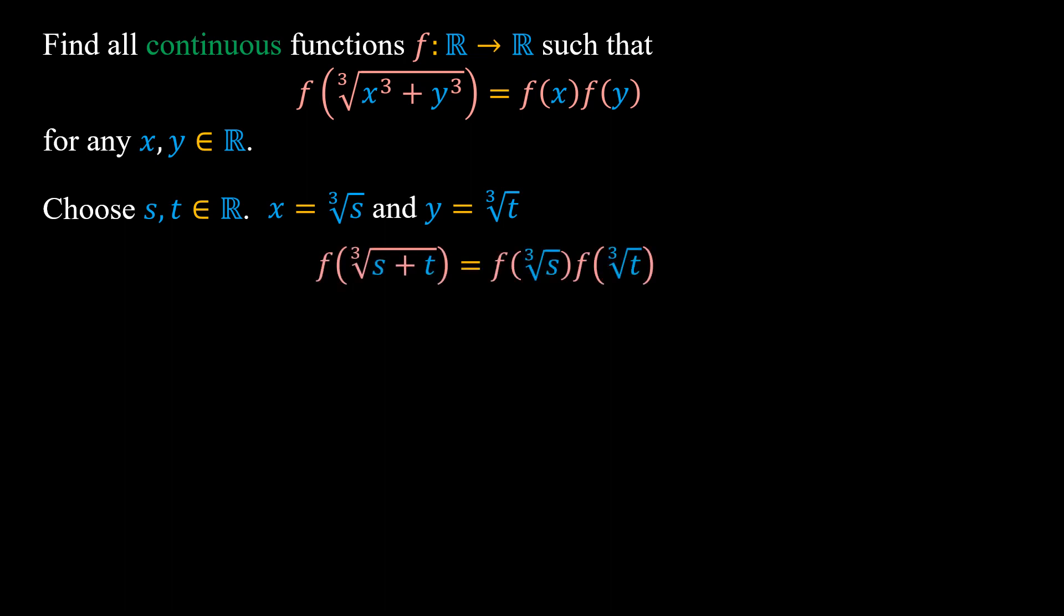If we suppose g of s equals f of the cubic root of s, we have g of s plus t equals g of s times g of t.